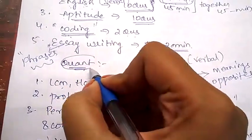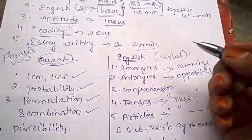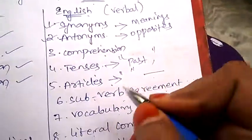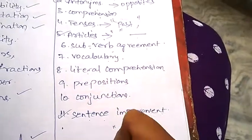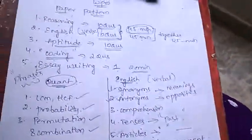Concentrate more on quantitative aptitude because this will be a little tough, and English is easy as usual. Concentrate more on synonyms, antonyms, articles and sentence improvement. All are important, but these are more important.